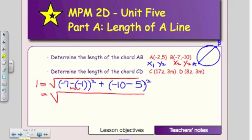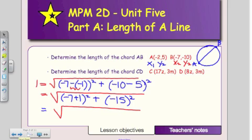So I can simplify this even further. Negative 7 minus negative 1, that's the same as negative 7 plus 1 squared plus negative 10 minus 5, that's negative 15 squared. So I want you to help me with my calculations for this particular question. So get your calculators out. Negative 7 plus 1, that's negative 6. What is negative 6 squared?